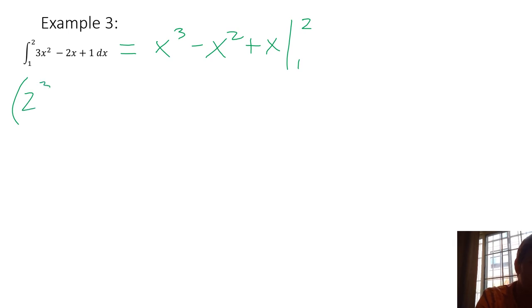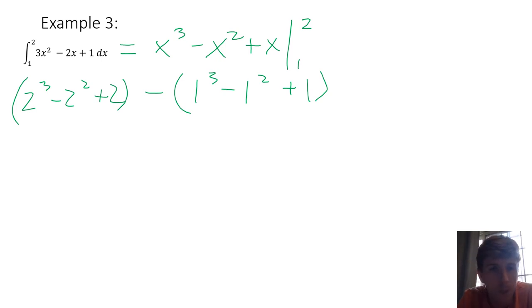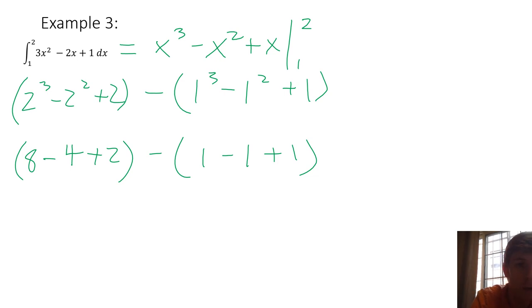I'm just going to plug in 2 here and then plug in 1. Luckily this one we avoided fractions, but that's not going to be the case a lot of the time. So hopefully you can get comfortable working with fractions if you're not already. 2 cubed is 8 minus 2 squared is 4 plus 2, minus 1 minus 1 plus 1. So 8 minus 4 plus 2 is 6. 1 minus 1 is 0 plus 1 minus 1 equals 5. Make sure you're remembering this is always subtraction in the middle there. If you're subtracting a negative, make sure you use all the correct signs. Don't screw that up in your work. But the answer here will be 5.